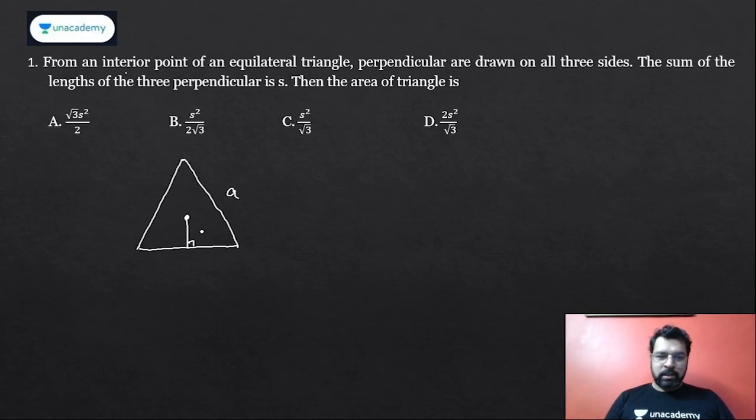If the side is a, this is a by 2 root 3. All three will be same, obviously. So we have assumed this is the incenter, and the length of all the perpendiculars will be same. So s is the sum of these three lines. Simply we can say it is nothing but 3 times a by 2 root 3. From that we can say a is nothing but 2s upon root 3.